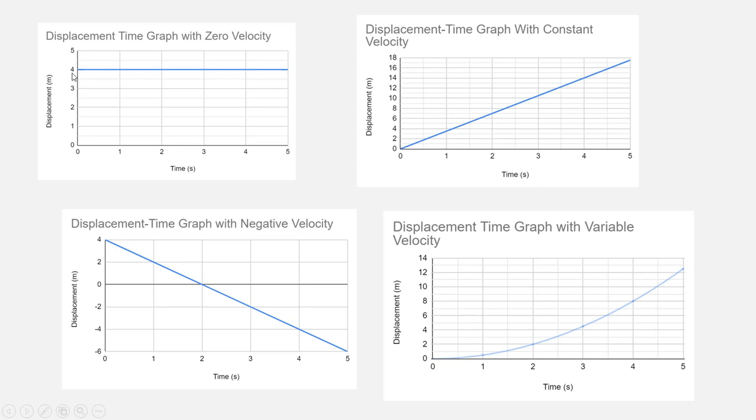So here's our four graphs. Our first graph here, our displacement, which means our distance from a specific point, is four meters at time equals zero. At one second, it's four meters. At two seconds, it's four meters. At three seconds, it's four meters. So in other words, this object simply isn't moving. So we can instantly tell that the velocity in this case is zero.